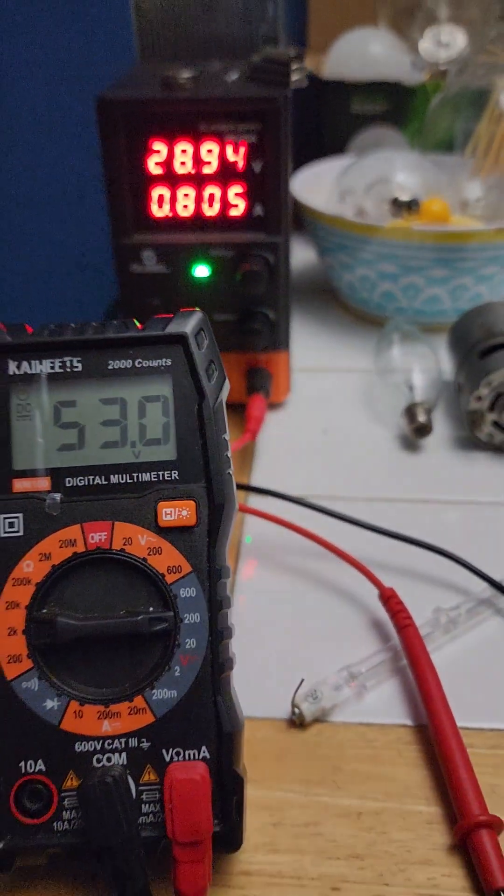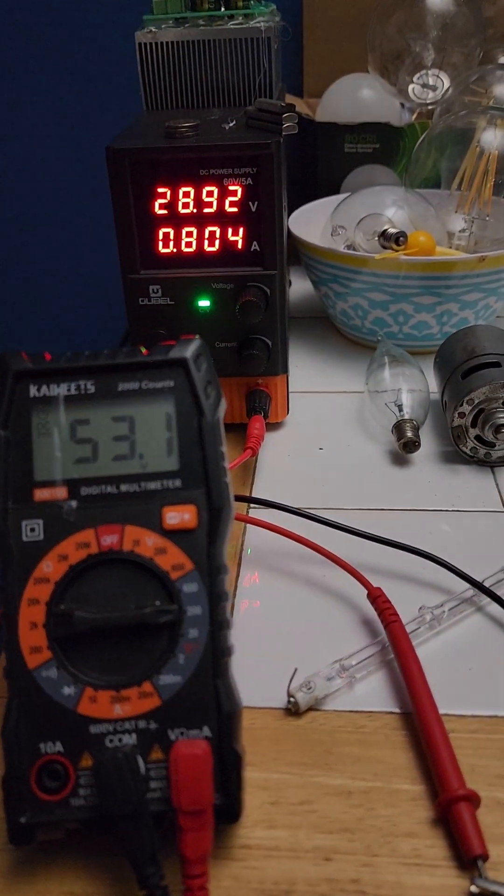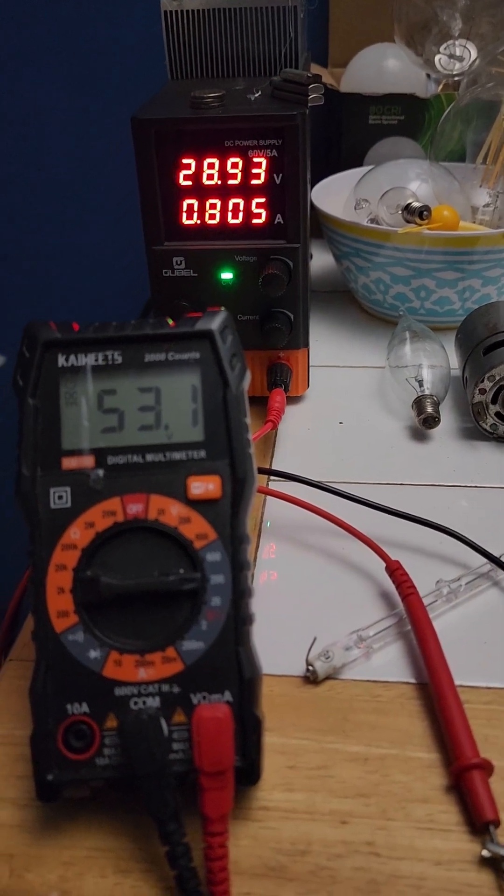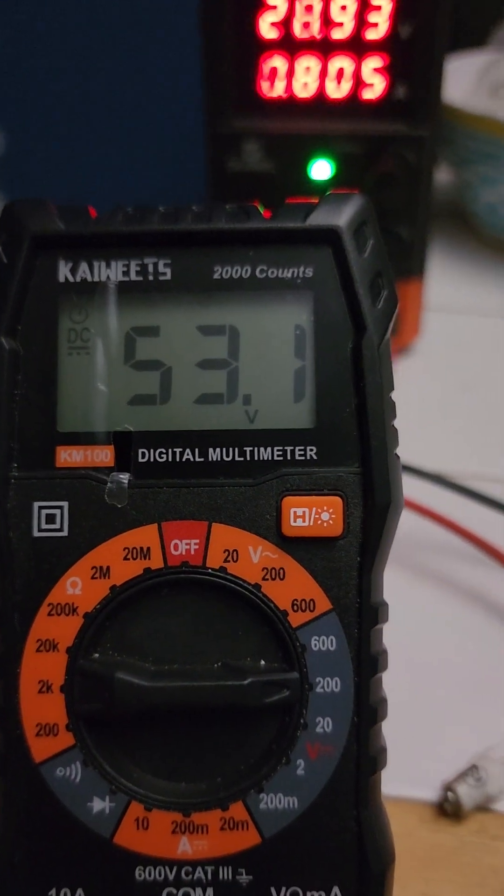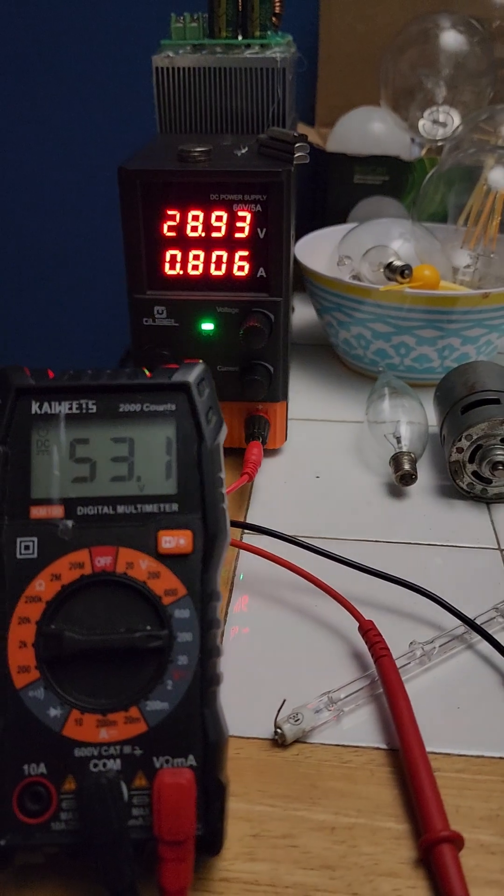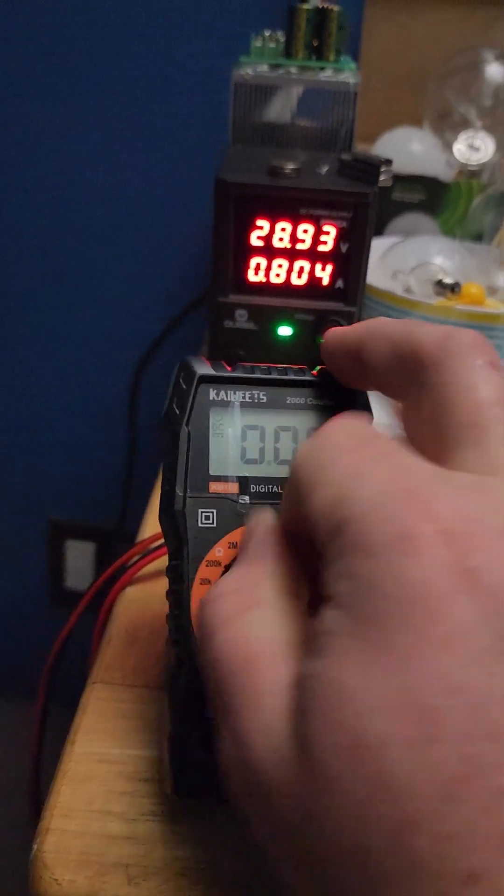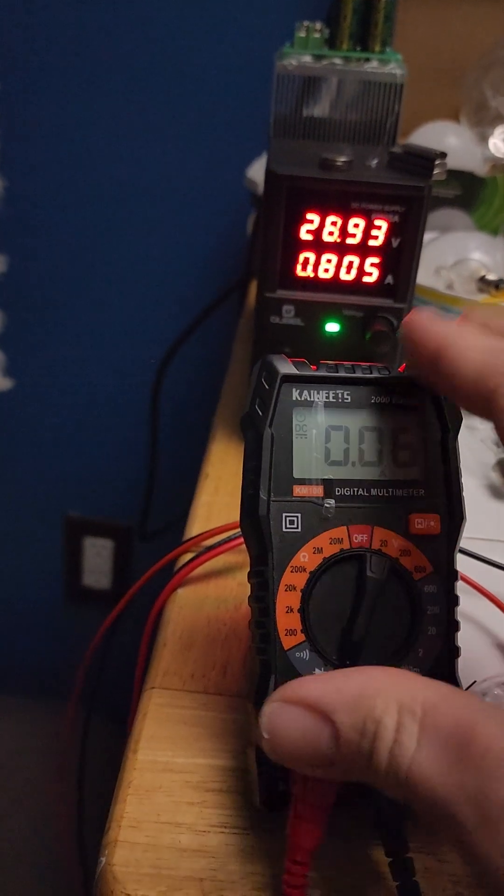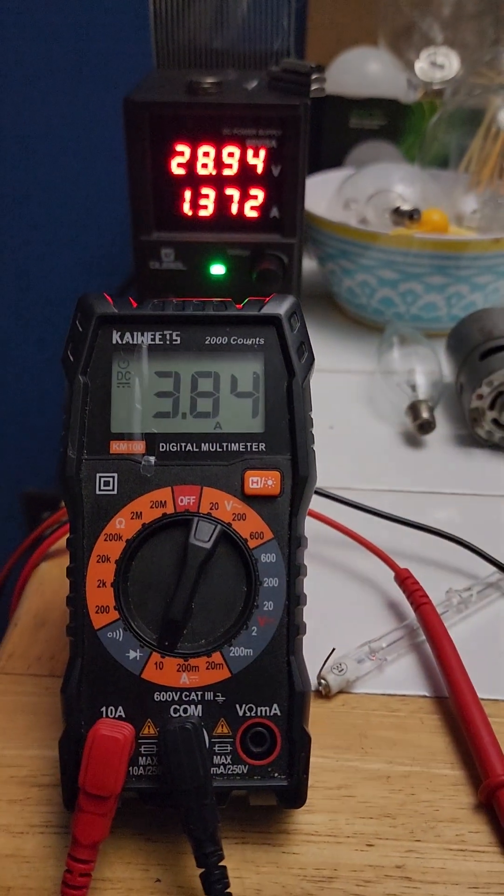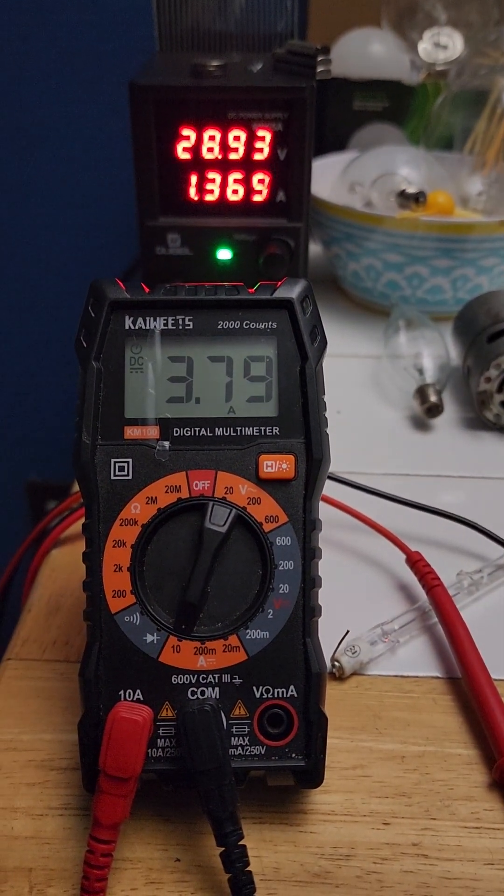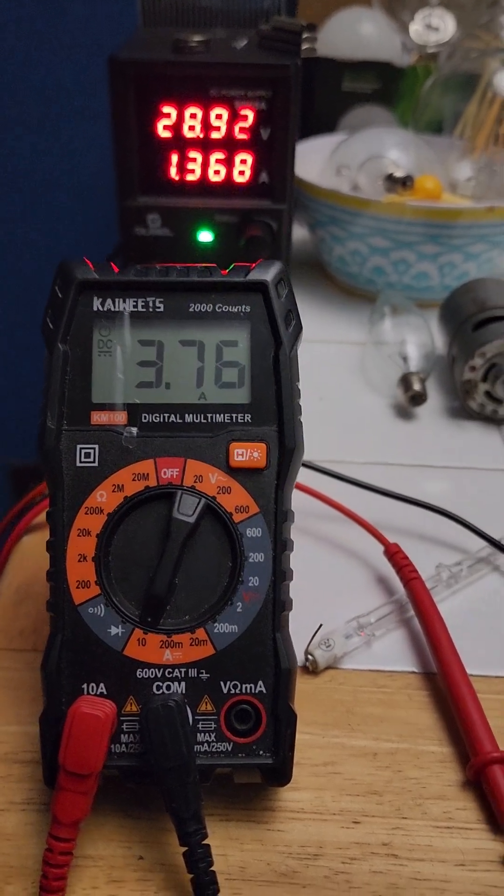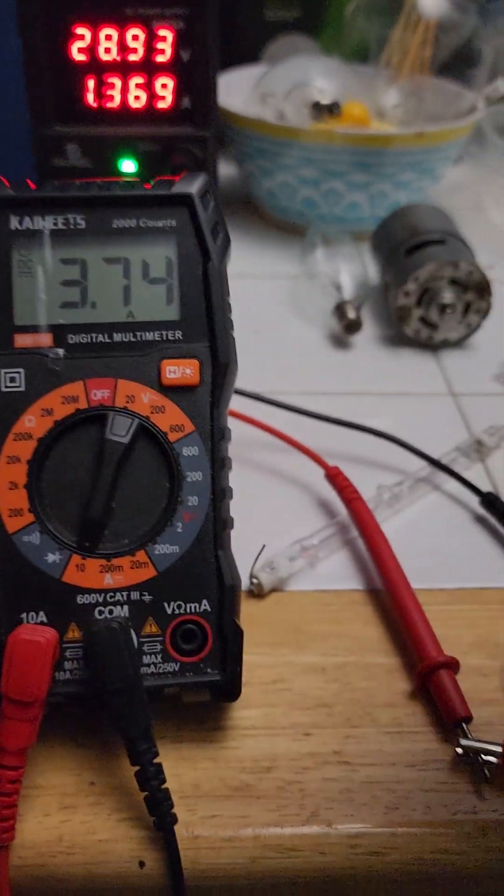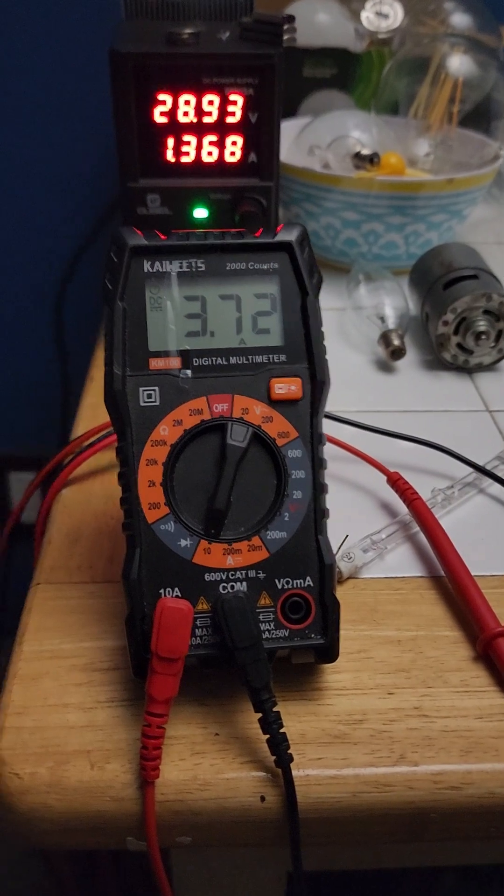As you can see it's clearly more. It doubled. 53 volts DC output with almost 4 amps. So even if my math is dead wrong, this output is still over-unity by a lot.